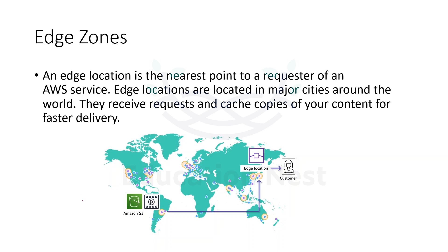Suppose we have one S3 bucket. An S3 bucket is nothing but a container to store content — you can store videos, images, text files, documents, whatever you want. It can support any kind of format, and you can store it all in S3.